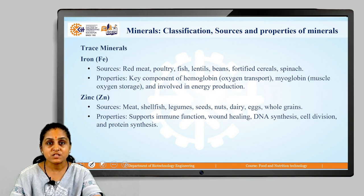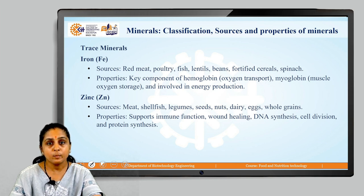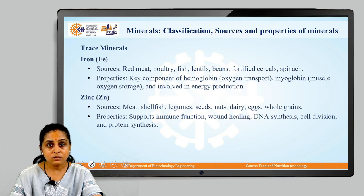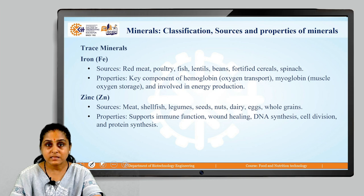The next trace mineral is zinc. Sources of zinc are meat, shellfish, legumes, seeds, nuts, dairy products, eggs and whole grains. Properties of zinc: it supports immune function, wound healing, DNA synthesis, cell division and protein synthesis in our body.